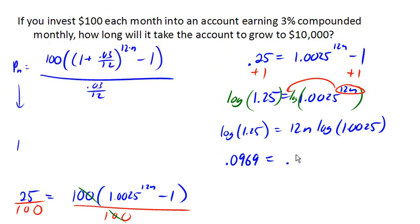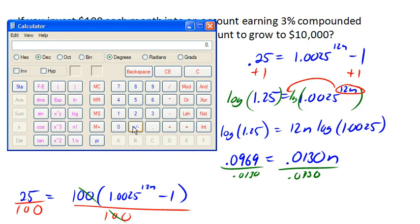So now I can divide both sides by .013. And let's see what I end up with. So we got .0969 divided by .013 is 7.454.